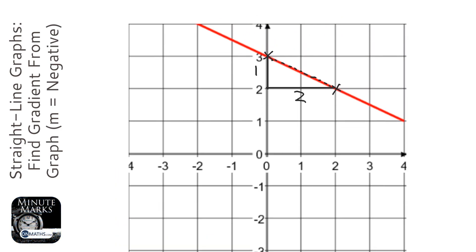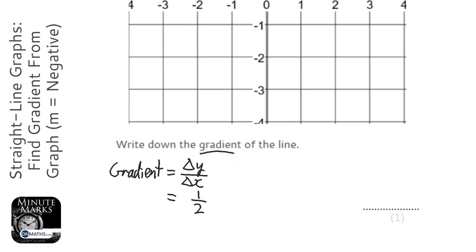However, if you look at the line, it's going down, OK? It's a negative gradient, so therefore we need to remember to put a minus before it. So the answer is either minus a half or minus 0.5.